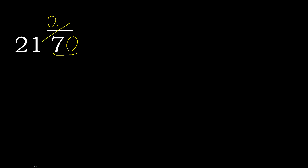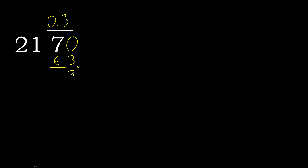21 multiplied by which number is nearest to 70 but not greater? 21 multiplied by 4 is 84 — that is greater. Multiply by 3: 63 is not greater. Subtract: 70 minus 63 equals 7.